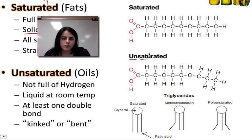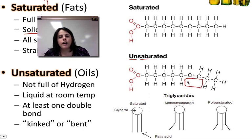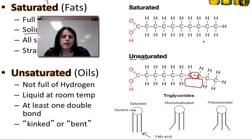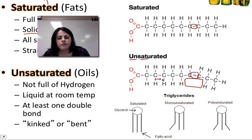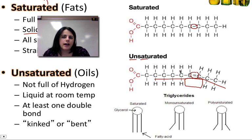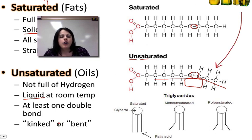Instead, we have a double bond. The carbons are double bonded to each other instead of the single bond. When they double bond to each other, it causes the structure to kind of bend — there's a kink or a bend in it. That's important because it allows the fatty acids not to pack well. When they don't pack well, they're going to be liquid at room temperature. So our unsaturated fatty acids are our oils at room temperature, all because they have a double bond, they're not full of hydrogen, and they have a kinked or bent structure.